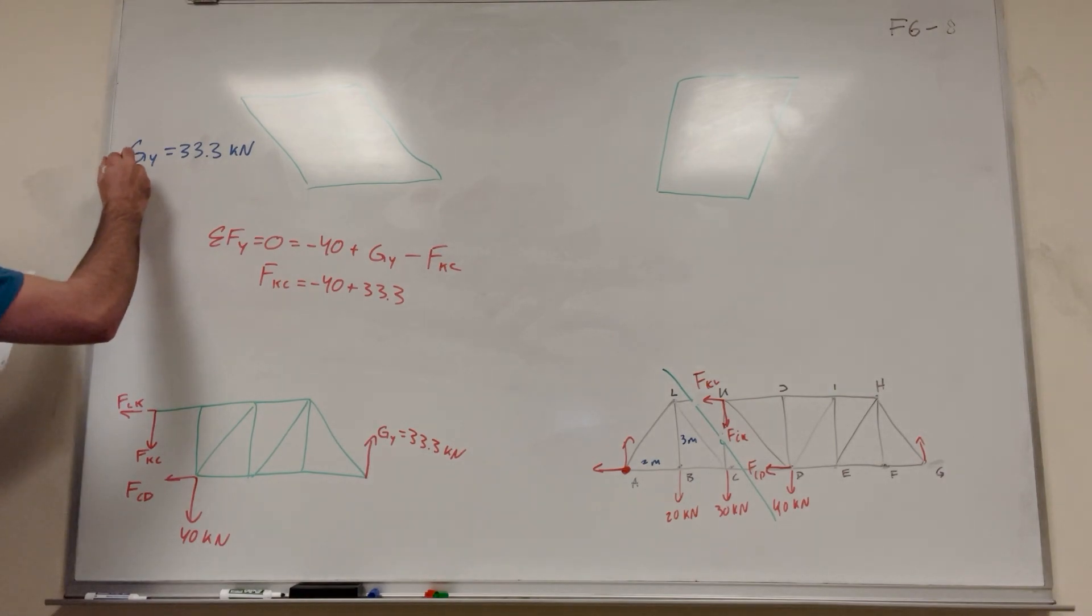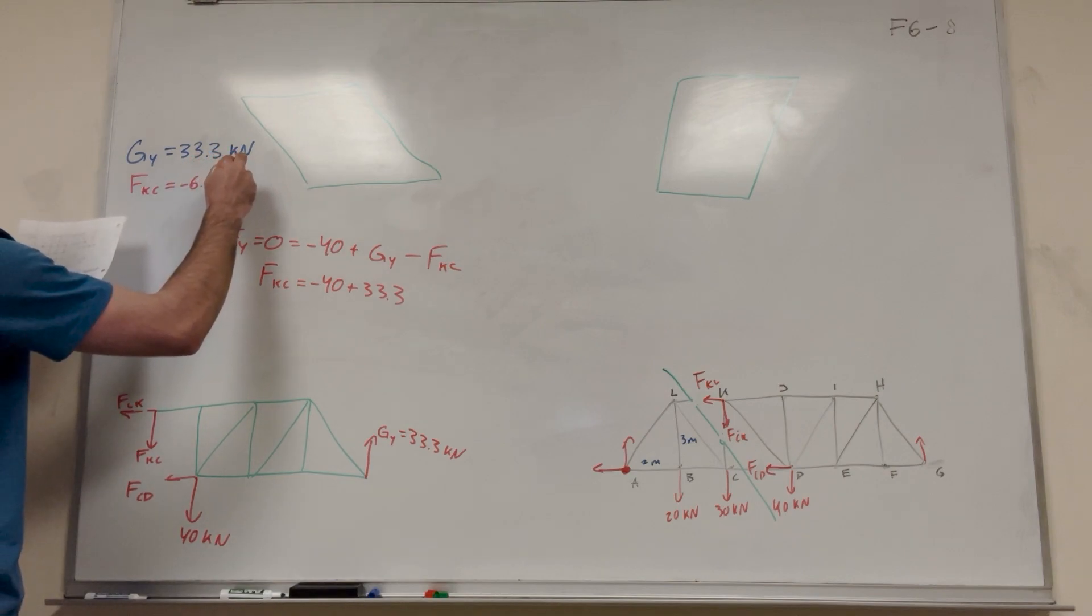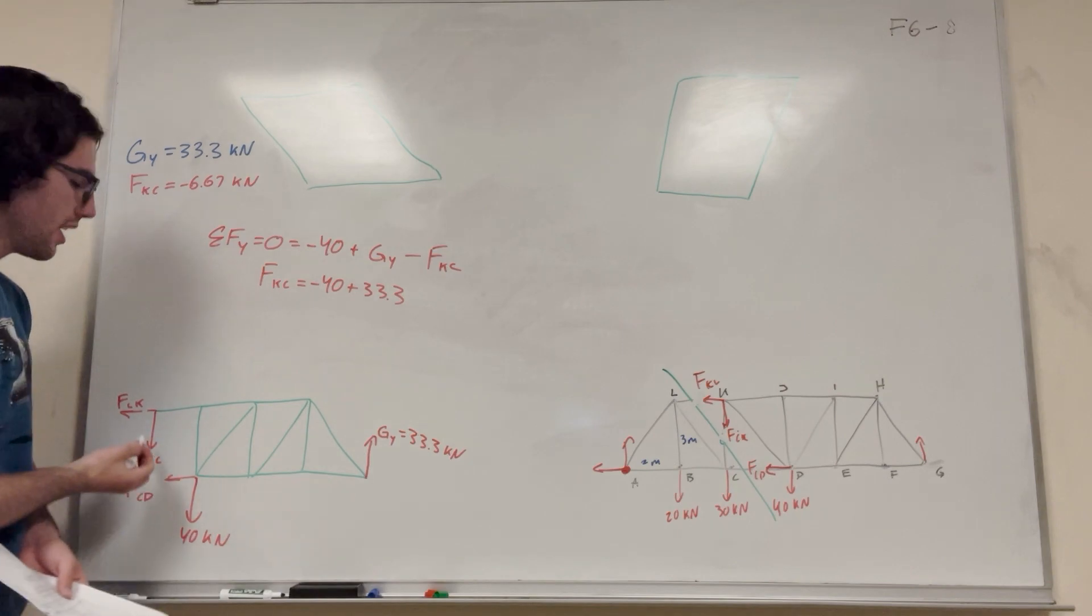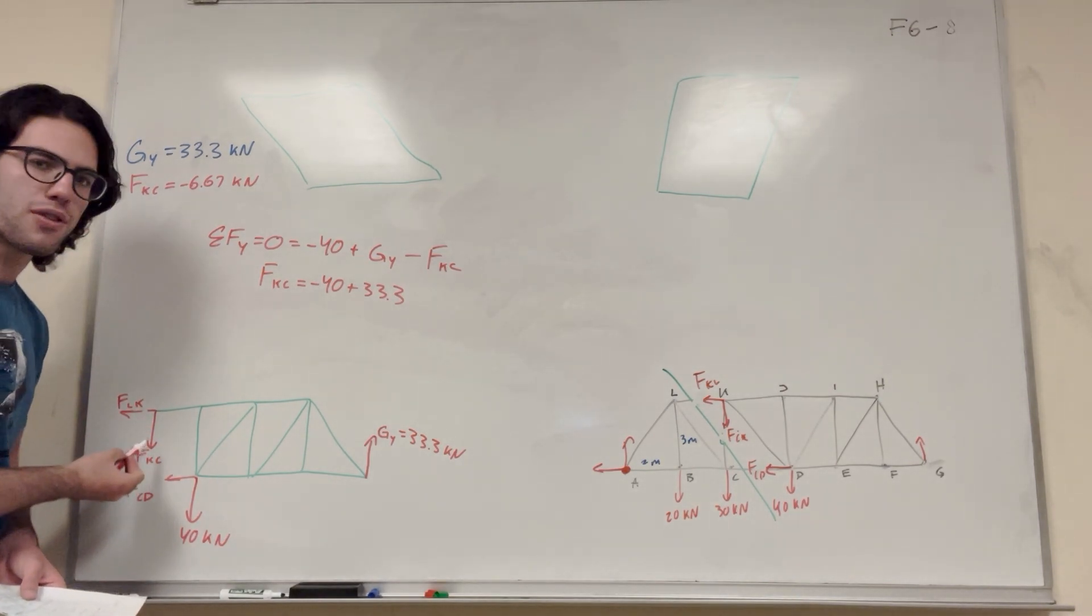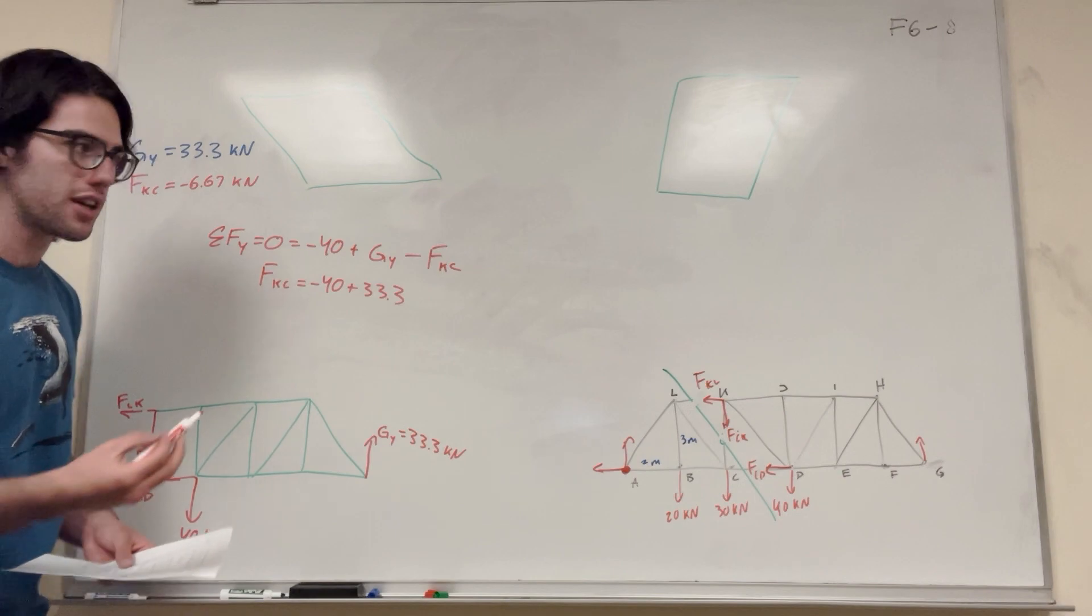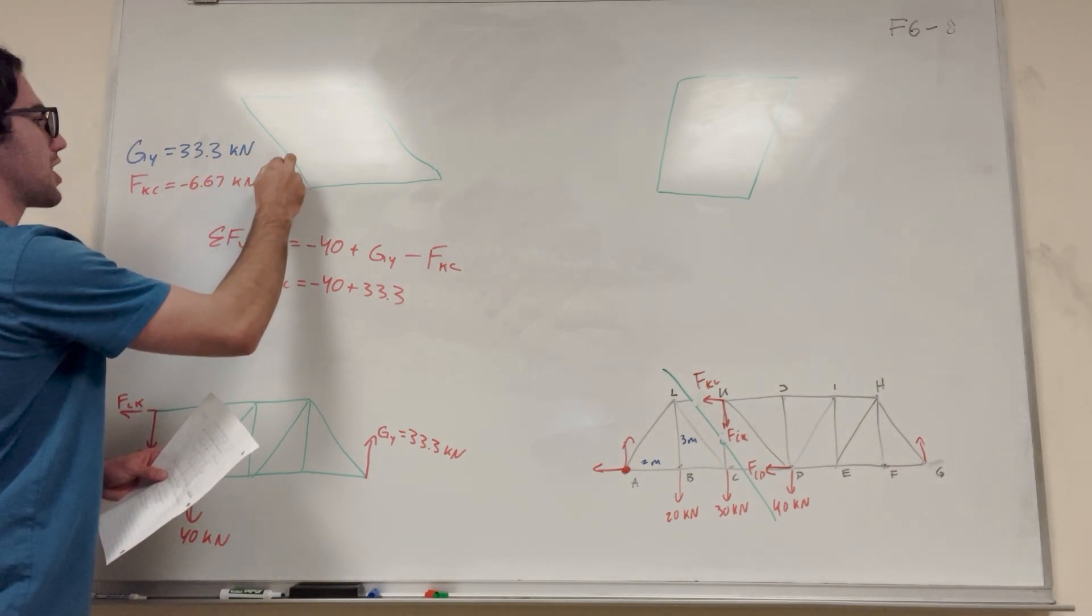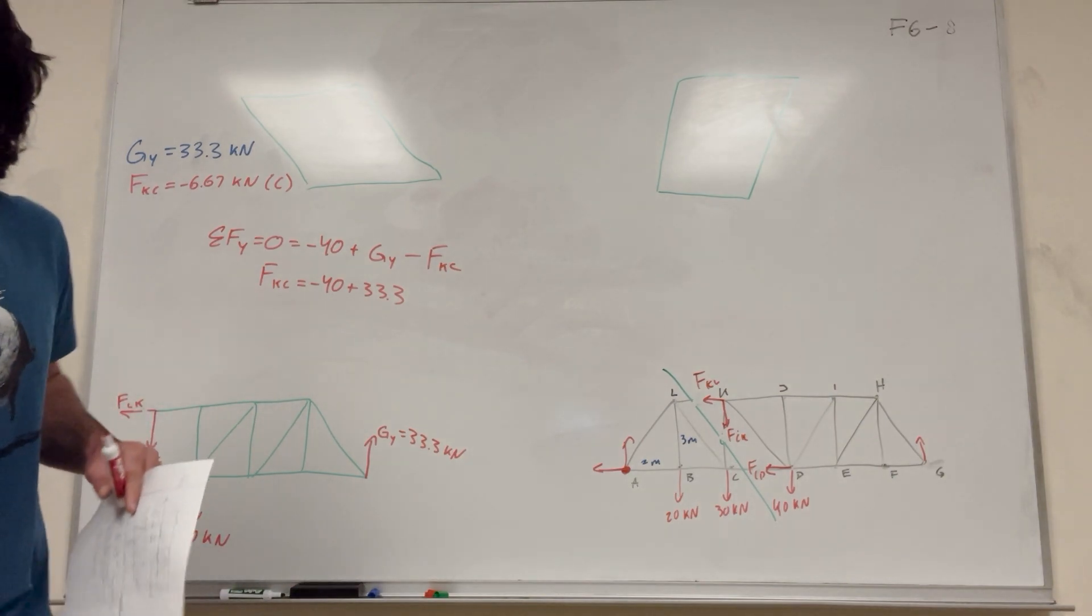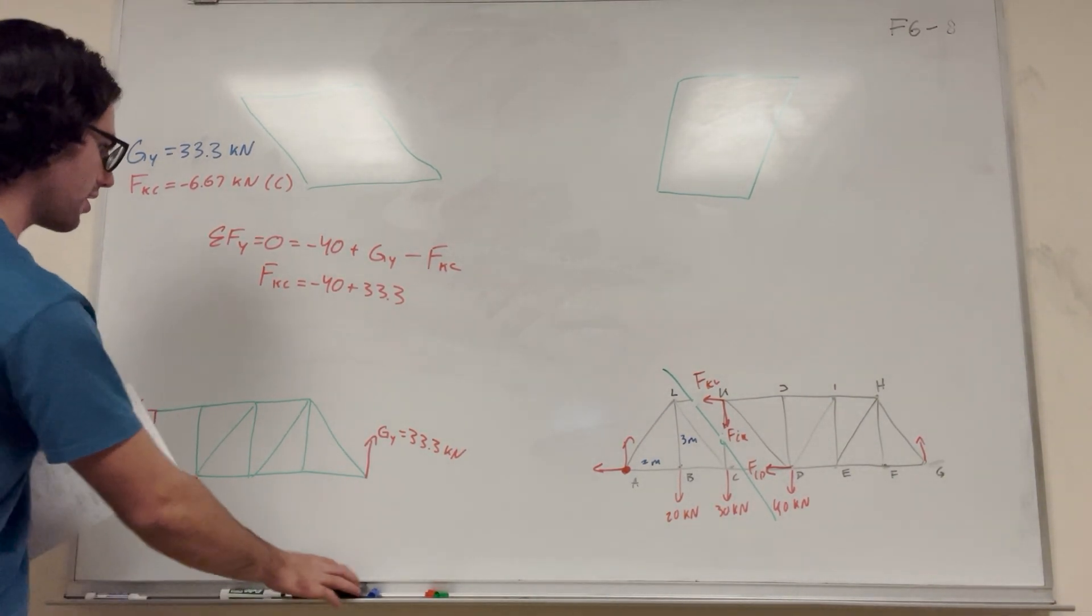And then you're going to get that FKC is going to be negative 6.67 kilonewtons. And that means if you get a negative number, because we assumed that this was in tension, if you get a negative number for tension, that means it's actually in compression. So we can label this a compression force. And there we go, we found one of them.